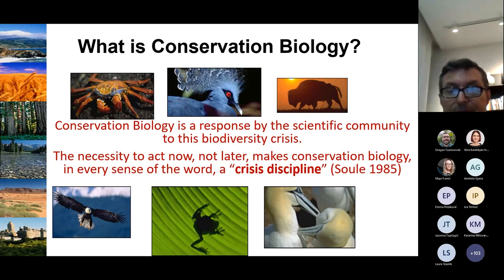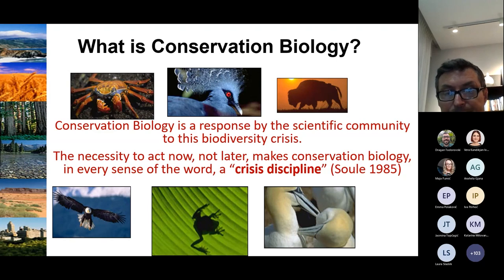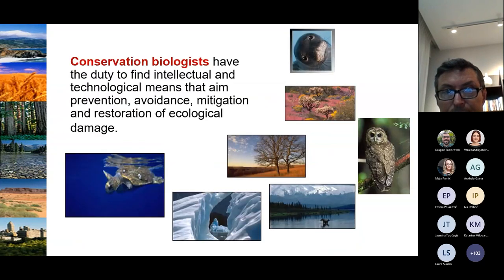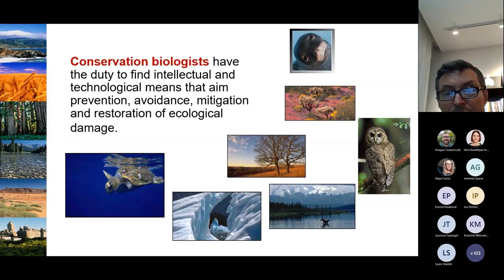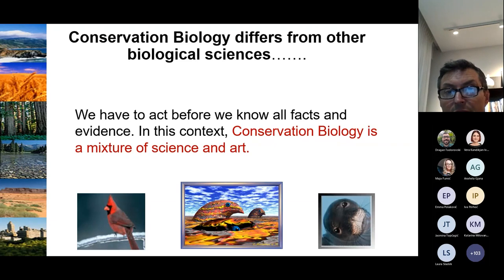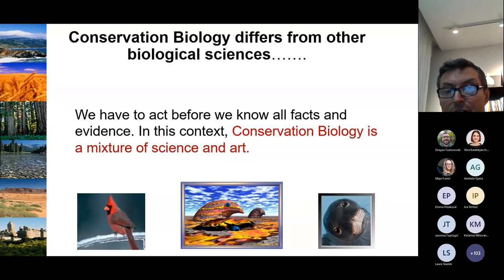What is conservation biology? Conservation biology is the scientific community's response to this biodiversity crisis. The necessity to act now — not later — makes conservation biology, in every sense of the word, a crisis discipline. Conservation biologists have a duty to find intellectual and technological means aimed at prevention, avoidance, mitigation, and restoration of ecological damage. Conservation biology differs from other biological sciences because we must act before we know all the facts and evidence. In this context, conservation biology is a mixture of science and art.